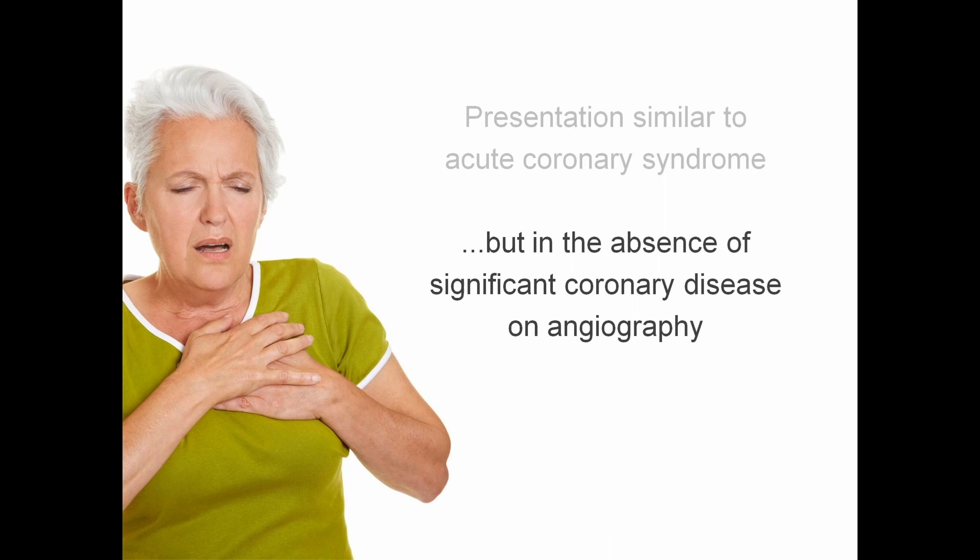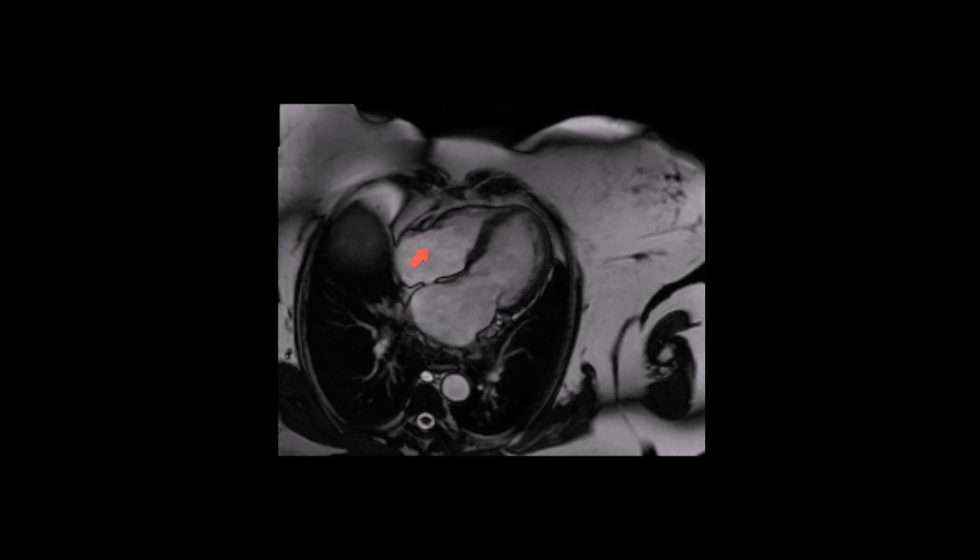So what can CMR offer us diagnostically in the assessment of this condition? Here's a cine CMR image taken in the four-chamber view. We have the left ventricle, left atrium and mitral valve, right ventricle, right atrium and tricuspid valve. What we see in this patient with Takotsubo cardiomyopathy is ballooning and virtual akinesia of the left ventricular apex, which is a very characteristic appearance.